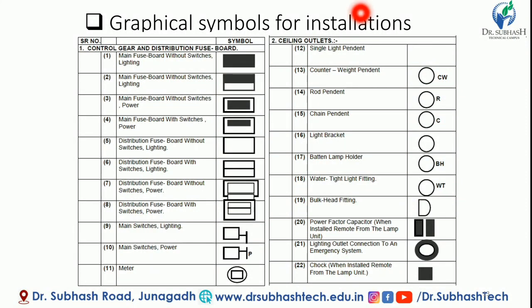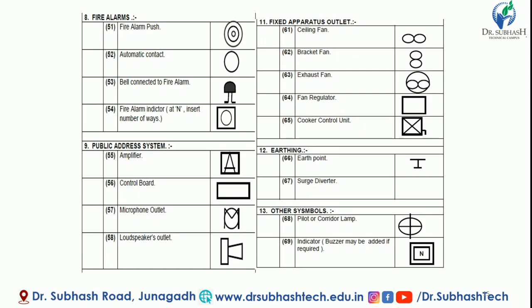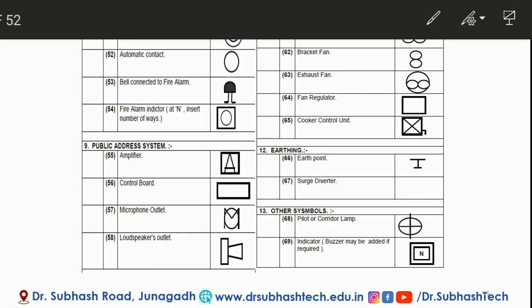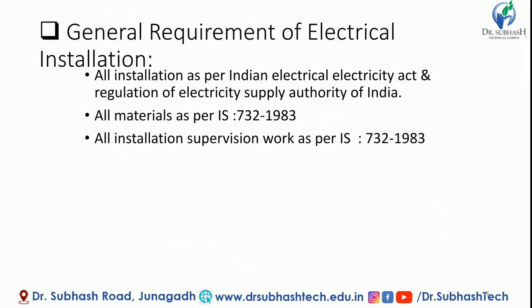Next are the symbols for ceiling outlets — see and remember each while drawing electrical layout. The symbols for bells, buzzers, and alarms are also shown. Next are the symbols for fire alarms — how to describe a fire alarm in the electrical layout. For the public addressing system, symbols include amplifier, mic, control board, and microphone outlets. Other symbols are also present, including earthing which is common.